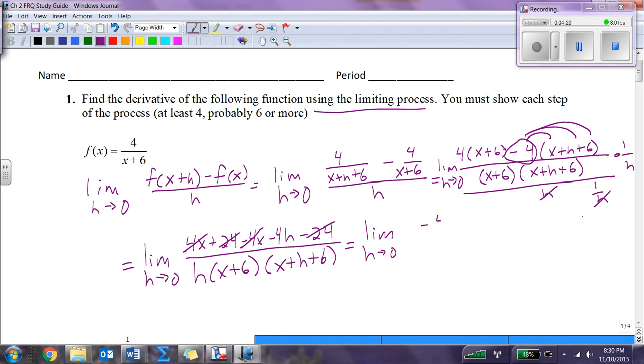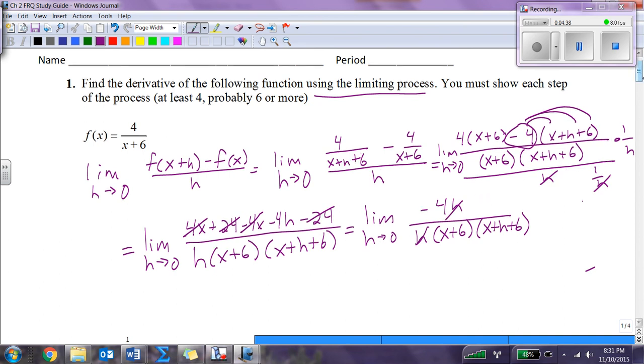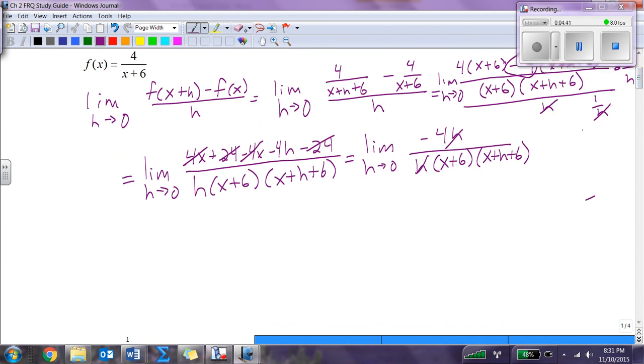Now I have negative 4h over h times x plus 6 times x plus h plus 6. The h's cross out. Now I'm able to plug in that 0 for h. This equals negative 4 over x plus 6 times x plus 0 plus 6, which is negative 4 over x plus 6 squared. That is my derivative.